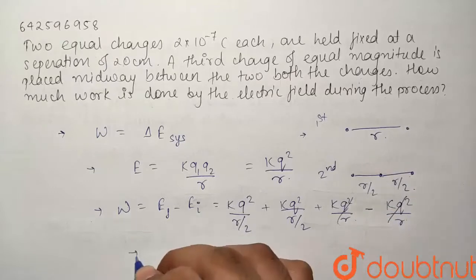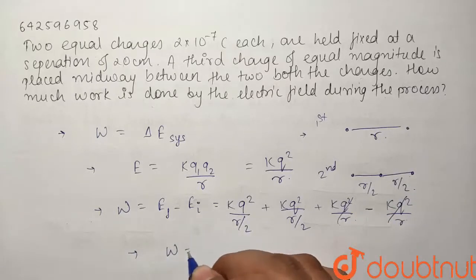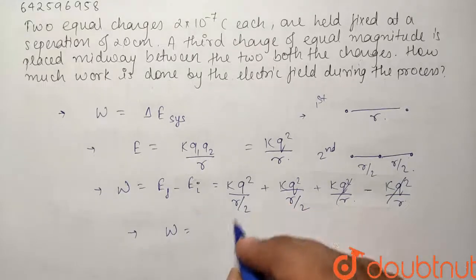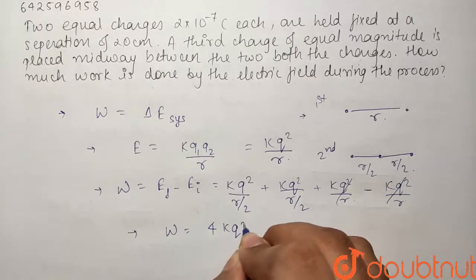So these two are going to cancel out. So basically our work done comes out to be equals to 4KQ²/R.